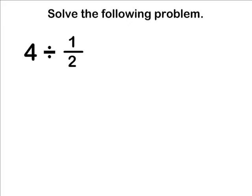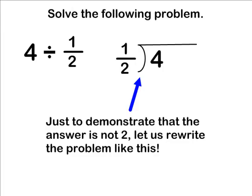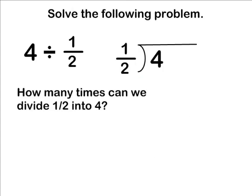When many people see the problem 4 divided by 1 half, many people would respond with the answer 2. However, the answer is not 2. To demonstrate that the answer is not 2, let us rewrite the problem. Instead of thinking about the problem as 4 divided by 1 half, we can think about it as how many times can we divide 1 half into the number 4, or how many groups of 1 half can we get out of 4.